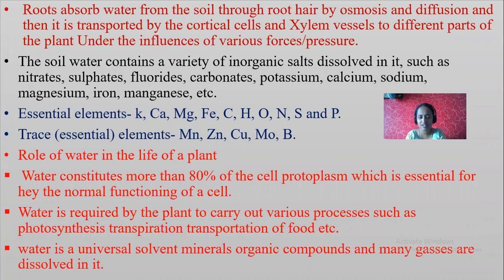Food is synthesized in leaves, but what about the stem and other parts like roots? How do they get food? Through the phloem. Transportation of food takes place through phloem only in the presence of water.